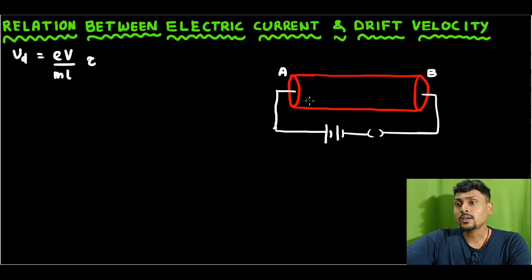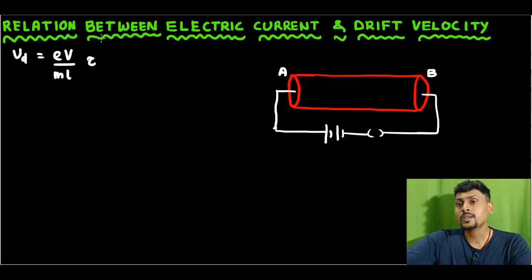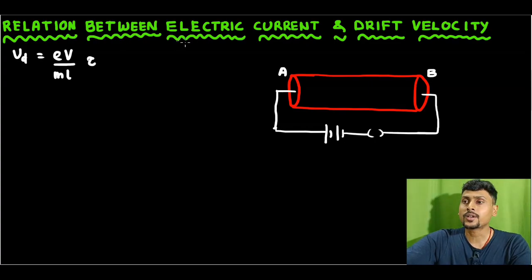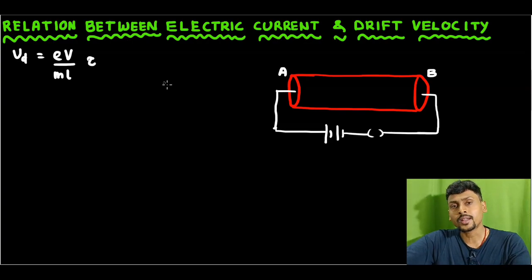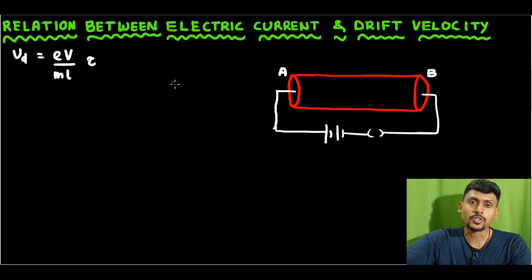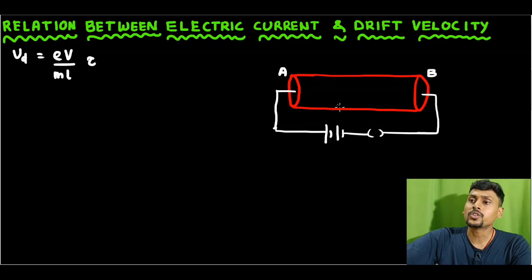Today we are going to discuss a new topic. The topic is the relation between electric current and drift velocity — how does electric current depend upon drift velocity? To derive this relation, I am going to draw a diagram.